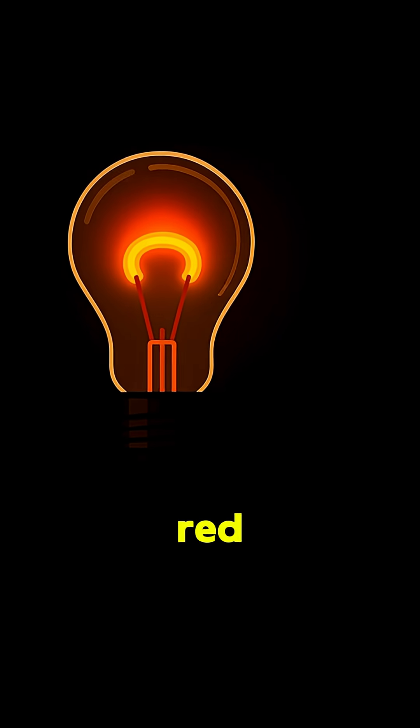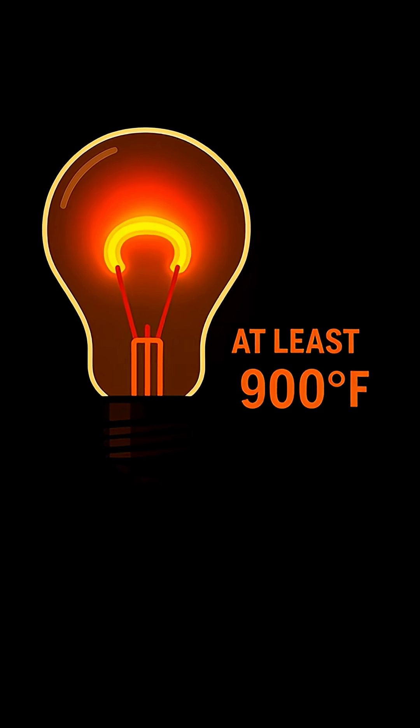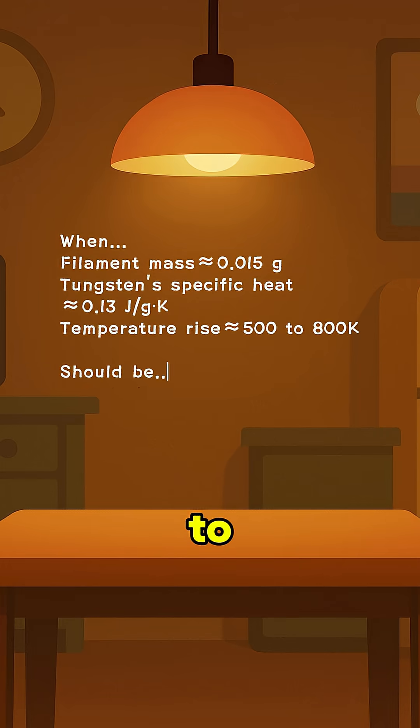To make one of those glow red for just a short flash, the filament of a 60 watts bulb would need to reach at least 900 degrees Fahrenheit. That brightness takes about one to two joules of energy.